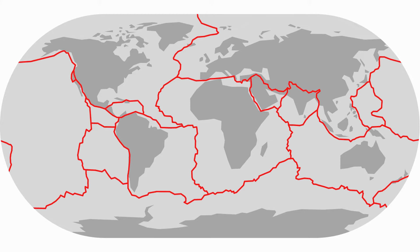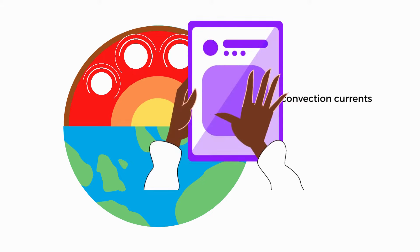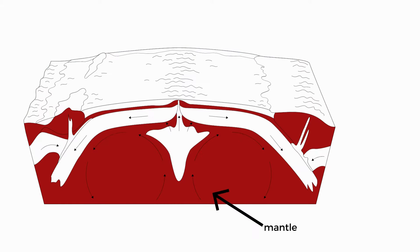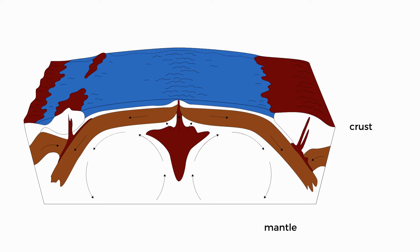We're going to look at what happens where these tectonic plates meet. Let's zoom in to see what's happening. Here we have the mantle, and here we have the crust divided into oceanic and continental.